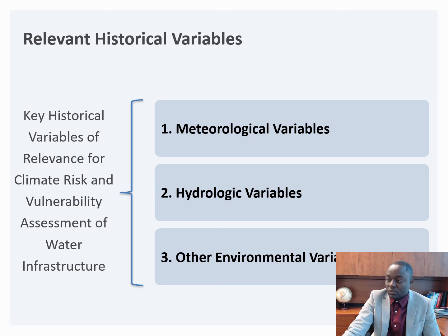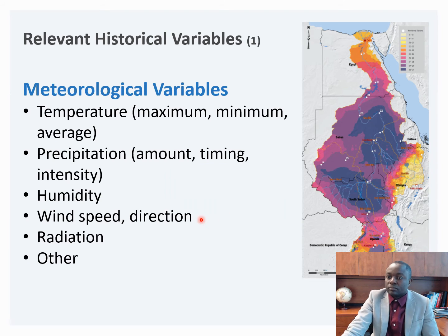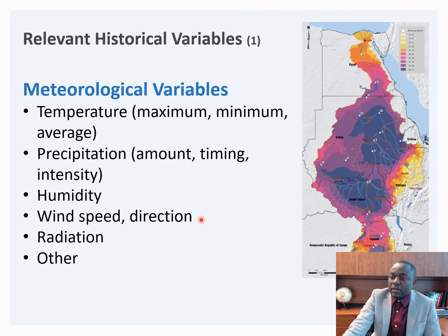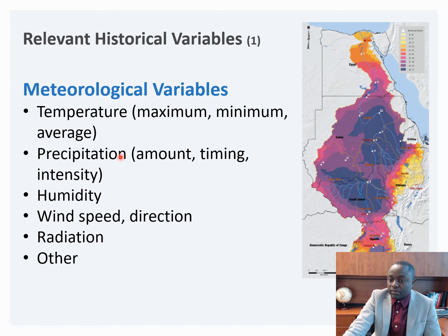Key relevant meteorological variables that we typically use for infrastructure risk assessment are temperature, precipitation, humidity, wind speed and direction, radiation, and other variables which are project specific.